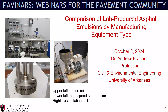Welcome to Pavinars, webinars for the pavement community. My name is Andrew Bram, and today I'm going to talk about a comparison of lab-produced asphalt emulsions by manufacturing equipment types. We have an inline mill in the upper left-hand corner, a high-speed shear mixer in the lower left-hand corner, and a recirculating mill on the right — the three types of lab-scale manufacturing equipment we use to produce asphalt emulsions.